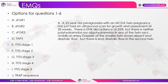EMQ case 4: A primigravida with MCDA twins at 28 weeks has EFW discordance of 25% — sFGR — but neither oligohydramnios nor polyhydramnios, so not TTTS. Umbilical artery Doppler of the smaller twin shows absent end-diastolic flow — constant, not cyclical — and end-diastolic flow is present in the second twin. This qualifies as sFGR Stage 2.